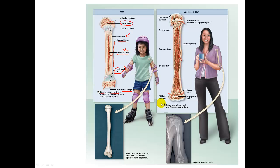The last step is the epiphyseal plates ossify. This is later in age, typically 18 years old or older — it happens when you are done growing. The epiphyseal plates are responsible for interstitial growth, which is a type of growth in which the bones lengthen. They are not responsible for appositional growth, which is the growth in girth or diameter of a bone. The epiphyseal plates will ossify to form the epiphyseal line, which is present in all adults, typically at the end of puberty — as young as 10 and as old as 25.